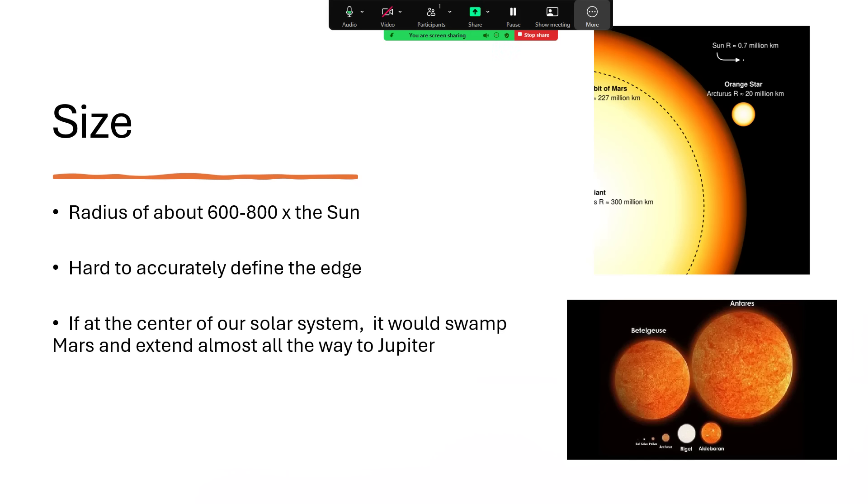It's an enormous size. We've got it compared with some of the other stars there. Betelgeuse is smaller than Antares. This comes in somewhere between 600 and 800 times the radius of our sun. It's quite difficult to define the edge though.